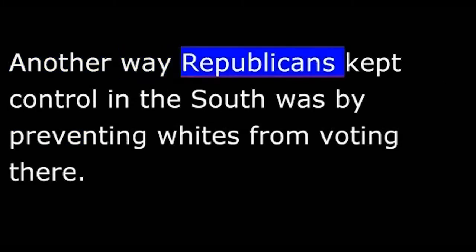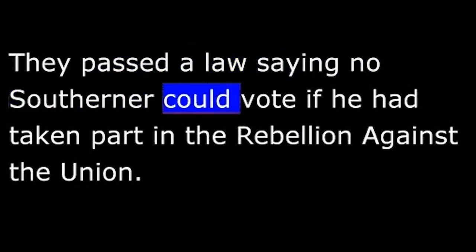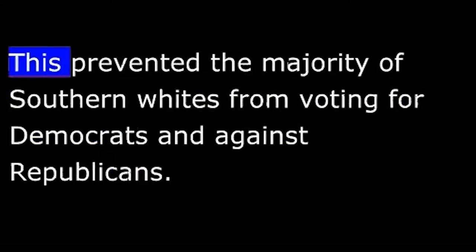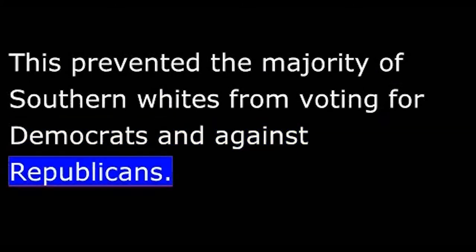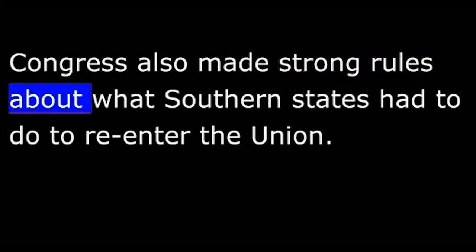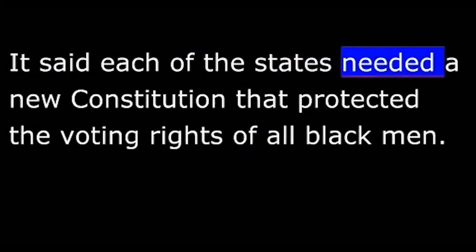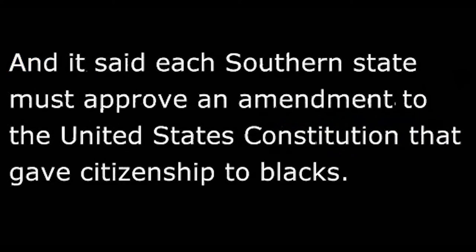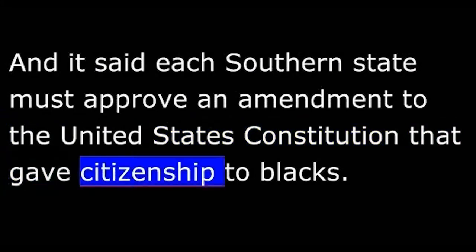Another way Republicans kept control in the South was by preventing whites from voting there. They passed a law saying no Southerner could vote if he had taken part in the rebellion against the Union. This prevented the majority of Southern whites from voting for Democrats and against Republicans. Congress also made strong rules about what Southern states had to do to re-enter the Union. Each state needed a new Constitution that protected the voting rights of all black men, and each Southern state must approve an amendment to the United States Constitution that gave citizenship to blacks.